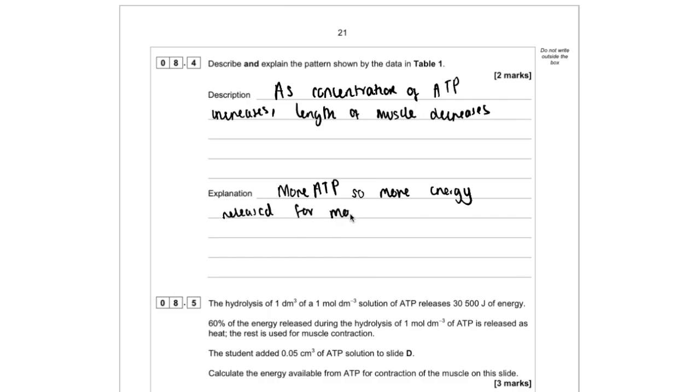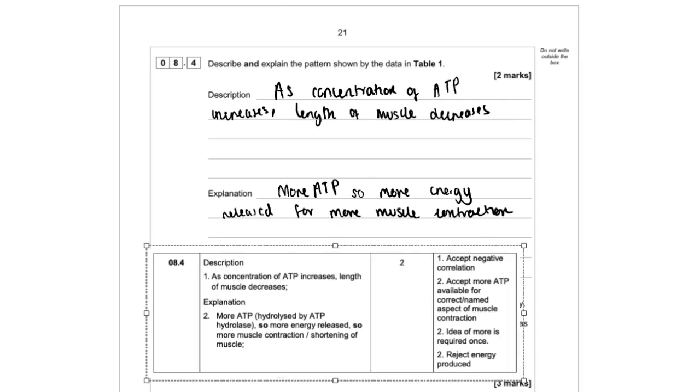And that energy is going into the muscle contraction and causing that to happen. So we can see on our mark scheme here that the explanation part, you've really got to fully explain that. So going from linking the ATP to the energy to the muscle contraction.